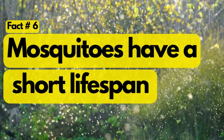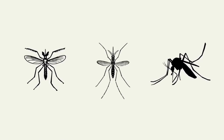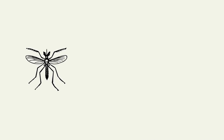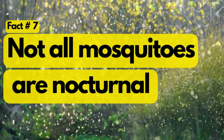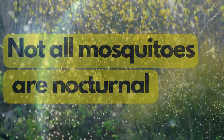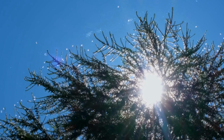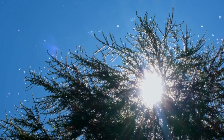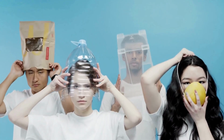Mosquitoes have a short lifespan. Depending on the species, they usually live for about two to four weeks. However, during that time, a female mosquito can lay hundreds of eggs, ensuring the continuity of their species. Not all mosquitoes are nocturnal — while most species are active during the evening and night, some are daytime biters. It's important to take precautions against mosquitoes both day and night.